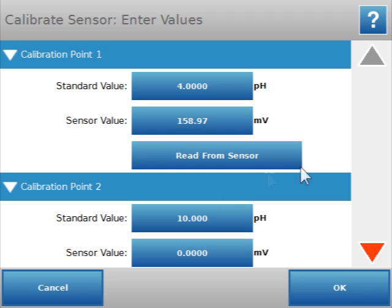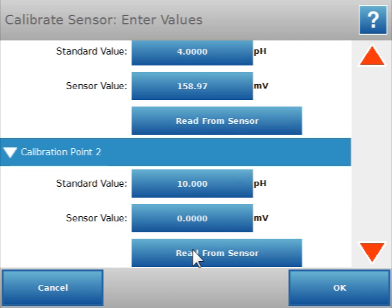I'm ready to read from that second point. I'll scroll down one and hit the read from sensor button. Now it will associate that value with a pH of 10.